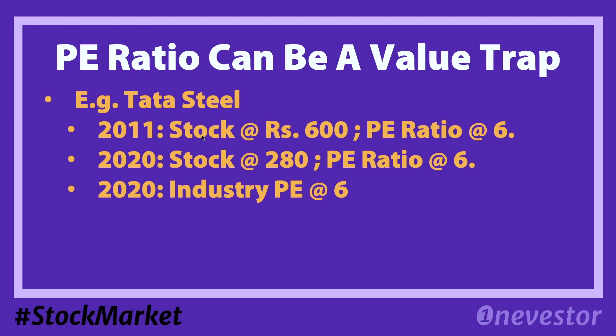For example, Tata Steel's stock price was around 600 with a PE ratio of 600. In 2020, Tata Steel's stock price fell to around 280, but the PE ratio was still very high. This shows why the PE ratio can be misleading for Tata Steel — the EV multiple is a better valuation tool in such cases.